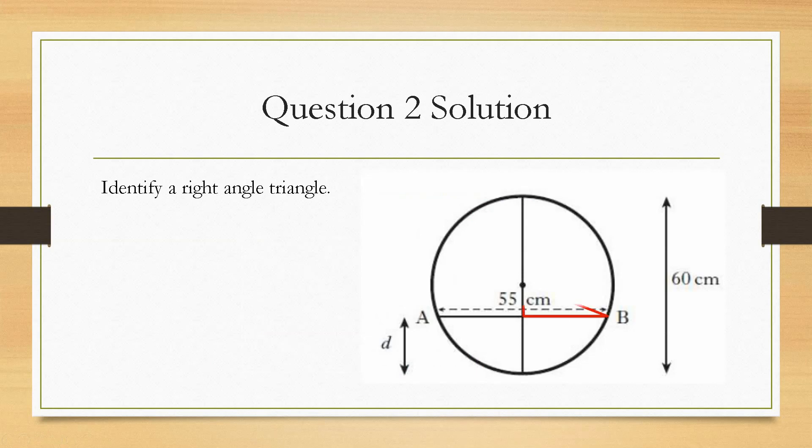Now, the one that we can use is this one here because we know what the radius is and we know what the size of AB is. So, we could half that and that will give us a new triangle with these dimensions.